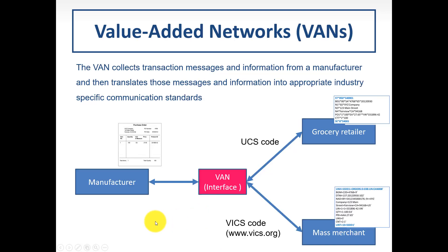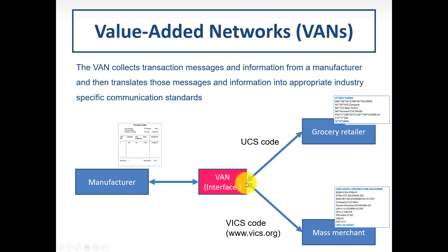VAN — Value Added Network — operates as an interface. It collects transaction messages from the manufacturer and translates them into the appropriate industry-specific communication standard. For example, a manufacturer's purchase order passes through the VAN interface, which translates it for a grocery retailer using UCS code or a mass merchant using VICS. This interface handles the translation, giving a glimpse of how EDI operates technically.